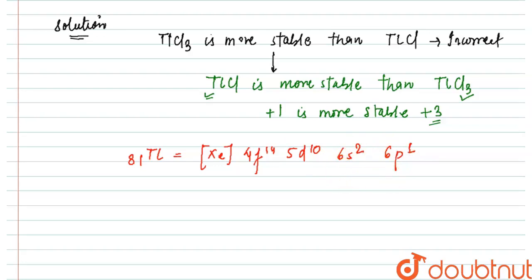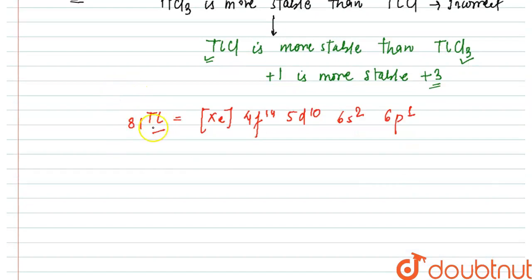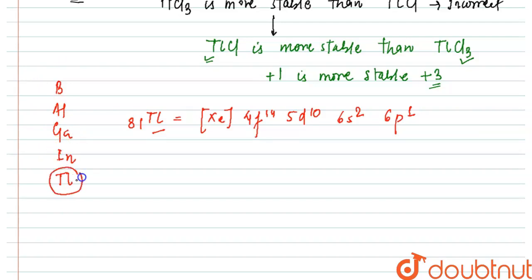Now, thallium from group 13 is at the bottom of its own group. Group 13 has boron, then aluminium, then gallium, indium, and then thallium. So thallium at the bottom is large in size. The first thing is that it is large in size. The second thing is that its electronic configuration has F and D subshells, and these F and D subshells create poor shielding.